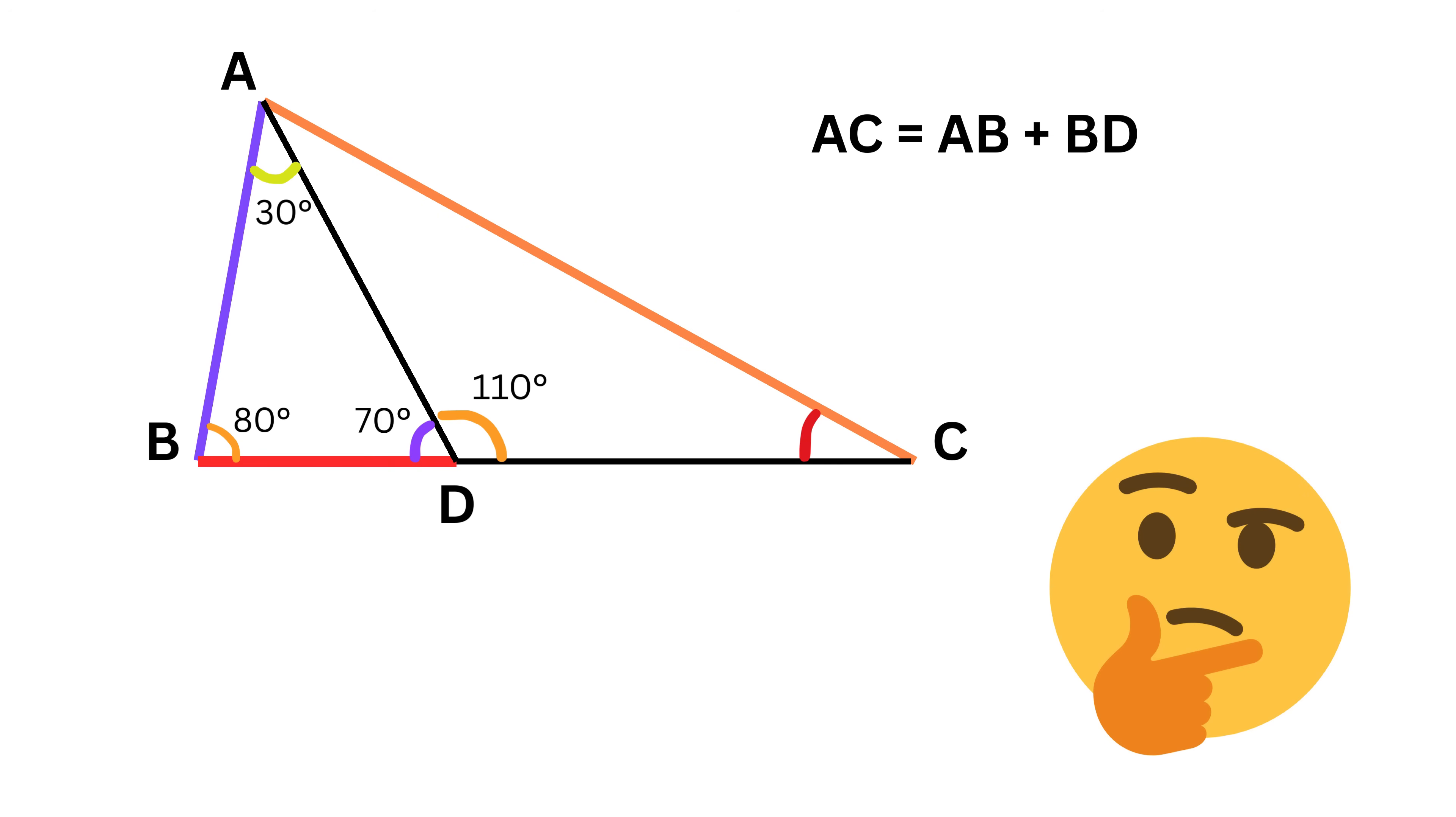But what can we do with this information? See, here comes the magic. In such situations it is helpful to straighten this broken line and turn it into a single segment. To do this, we extend segment AB and mark a point E here so that segment DB is equal to EB. Therefore, by construction, the new segment AE is equal in length to side AC.